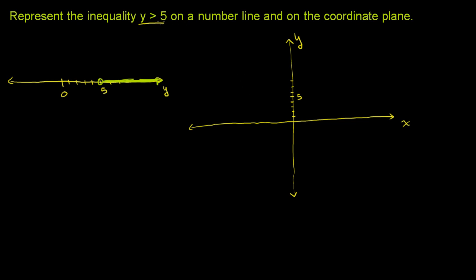And we want y to be greater than 5. So it's not going to be greater than or equal to. So we're not going to include 5. So at y is equal to 5, we will draw a dotted line. That shows that we are not including y is equal to 5.